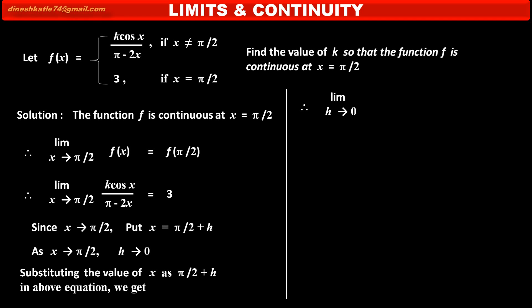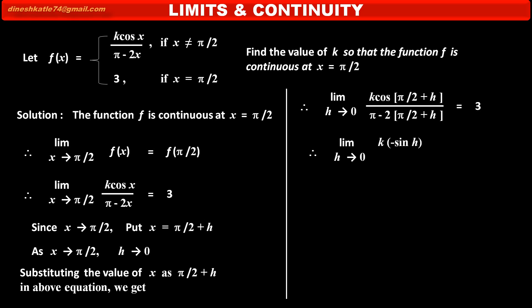Therefore, limit as h tends to 0 of k·cos(π/2 + h) upon π − 2·(π/2 + h), which equals 3. Using the identity cos(π/2 + θ) = −sin(θ), the numerator becomes k·(−sin h). Solving the denominator: π − 2·(π/2 + h) = π − π − 2h = −2h. So we get limit as h tends to 0 of k·(−sin h)/(−2h), which equals 3.